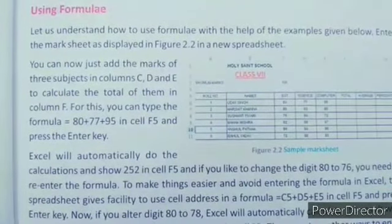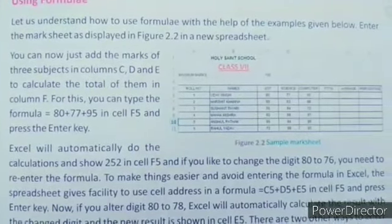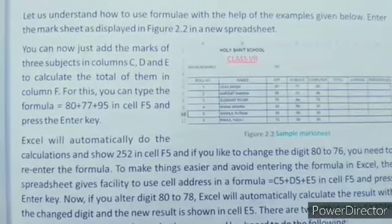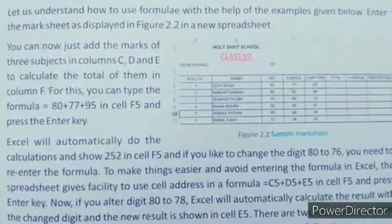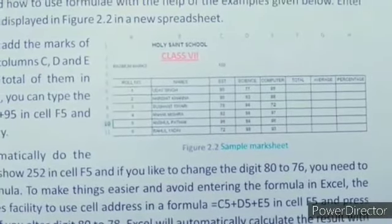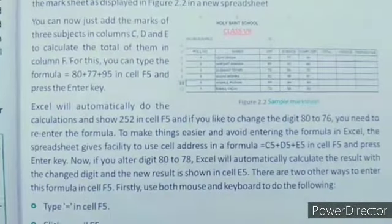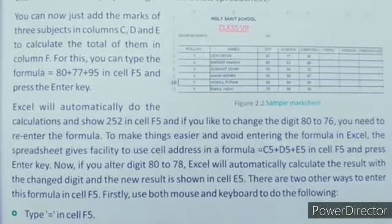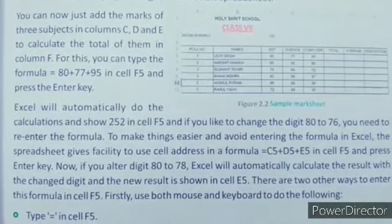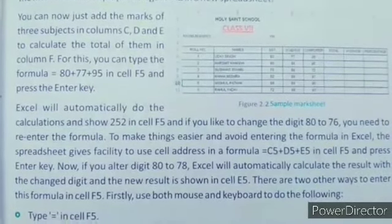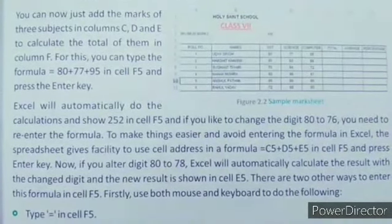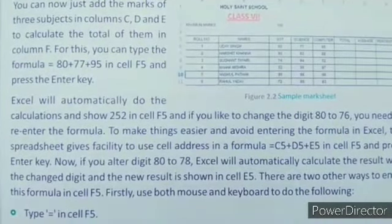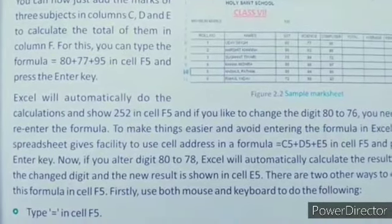Let us understand how to use formulas with the help of the example given below. Enter the mark sheet as displayed in Figure 2.2 in the new sheet. You can now just add the marks of 3 subjects in columns C, D, E to calculate the total in column F. For this, you can type the formula 80 plus 77 plus 95 in cell F5 and press the enter key.